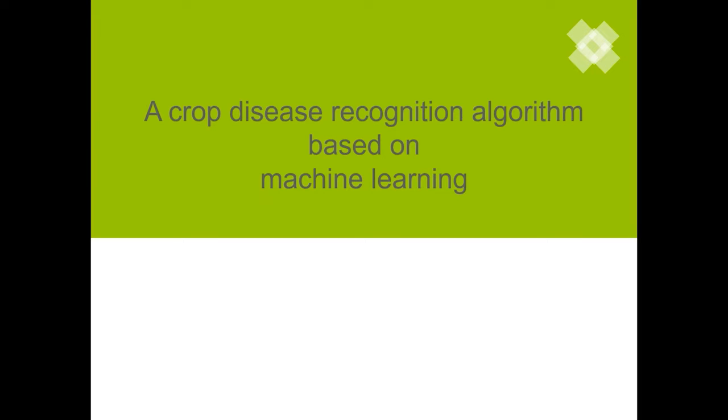Manual identification requires accumulation of experience and often cannot accurately and timely judge and deal with different situations when crops have problems. These shortcomings have seriously affected the development of agricultural modernization.